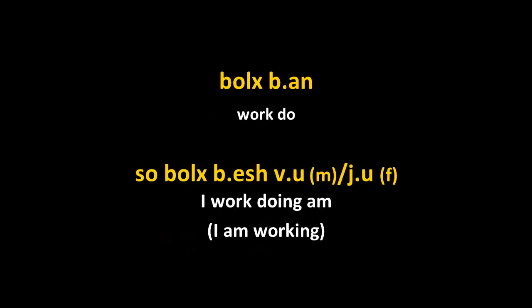If the verb is intransitive, typically the verb 'to do' agrees with its own internal noun. For example, boelch ban means 'to do work.' The verb dan already has the B prefix to agree with boelch ('work'), and since there is no object, the B will always be there. So so boelch biezhu — 'I am working' — and the auxiliary verb still agrees with the subject.